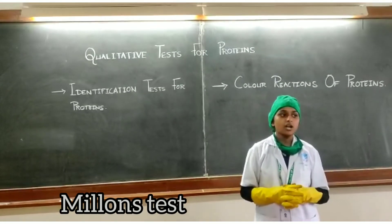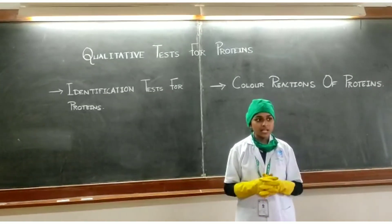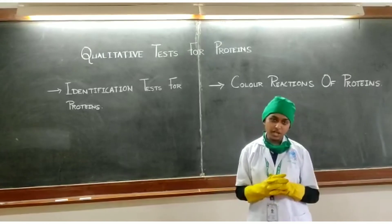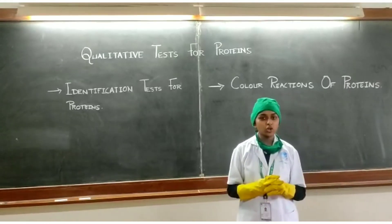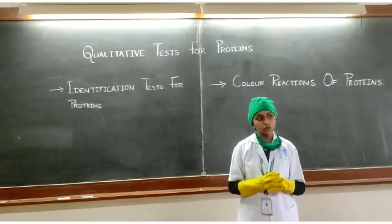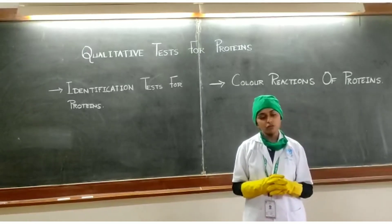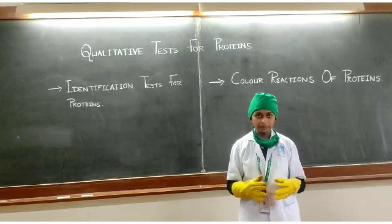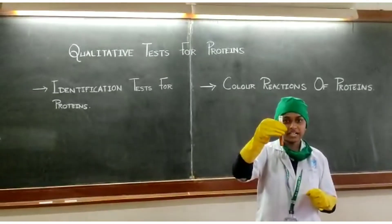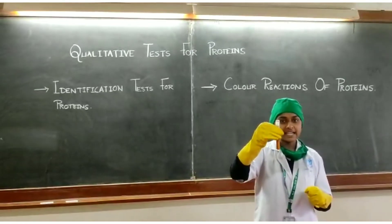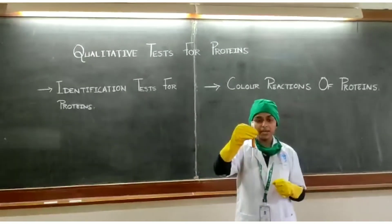Millon's test: 2 ml of a sample plus 1 ml of Millon's reagent (HgSO4). Mix well and boil for 2 minutes, then cool. Add sodium nitrite solution. By performing it, appearance of a red color indicates that tyrosine-containing protein may be present.